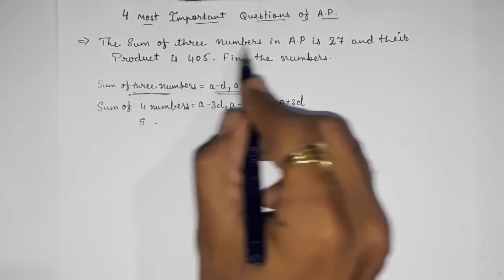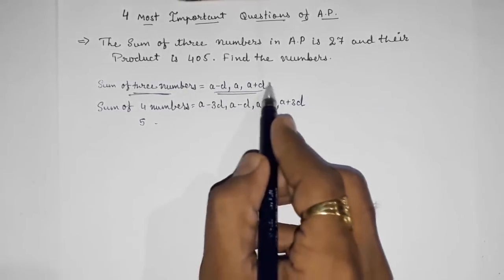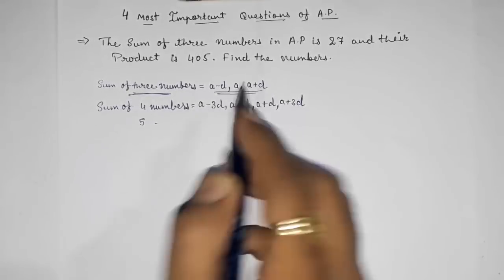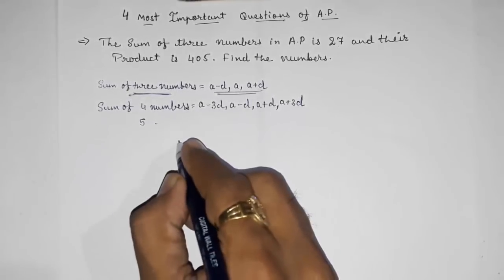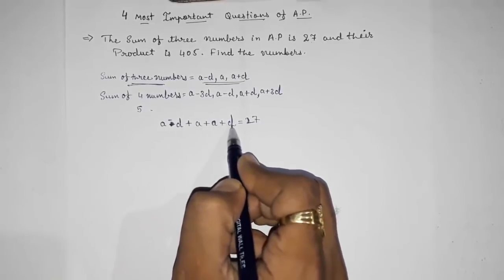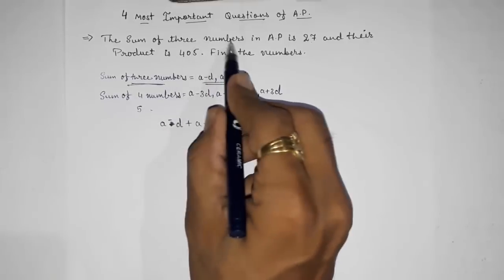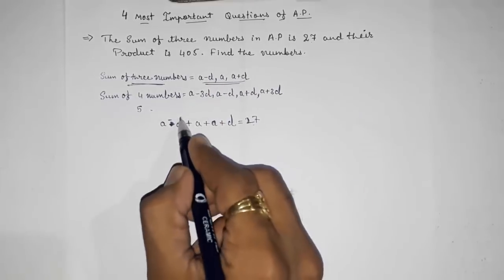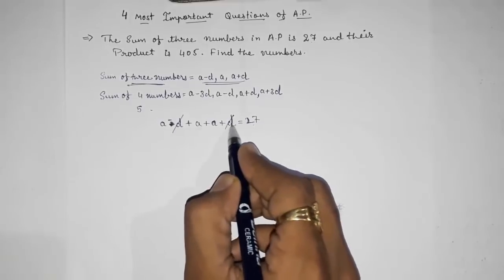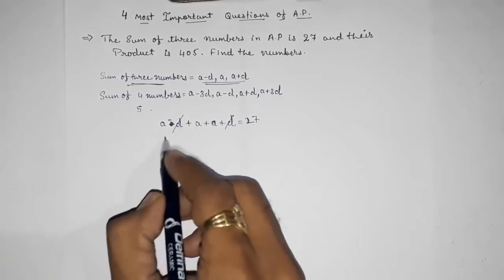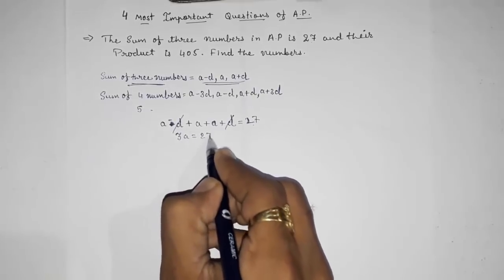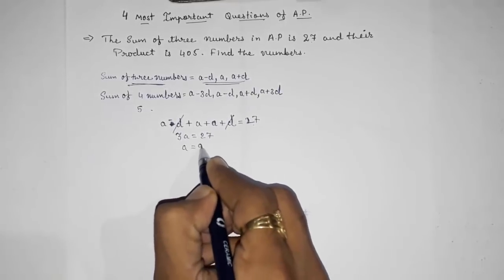Now sum of three numbers is 27, so we add our supposed terms: A minus D plus A plus A plus D equals 27. The D terms cancel out, so we get 3A equals 27, and therefore A equals 9.